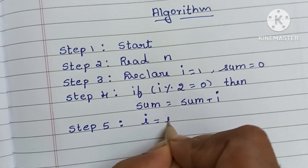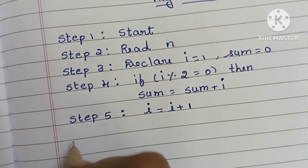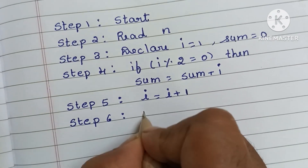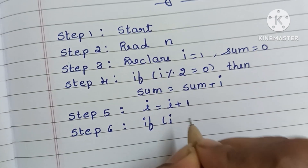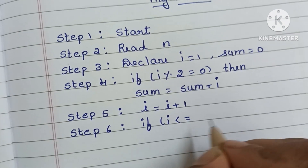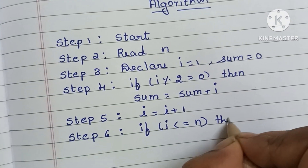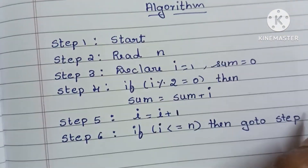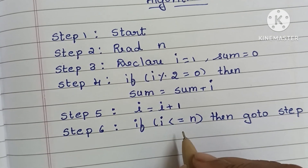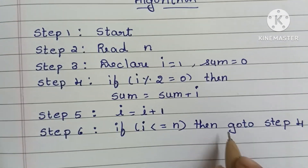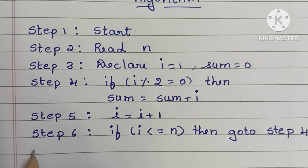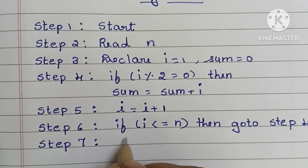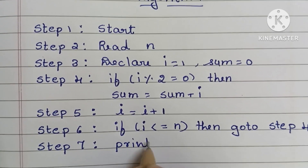In step 5, we increment i: i is equal to i plus 1. In step 6, we check if i is less than or equal to N. If true, then go to step 4. If i is less than or equal to N, go back to step 4; otherwise proceed to step 7.